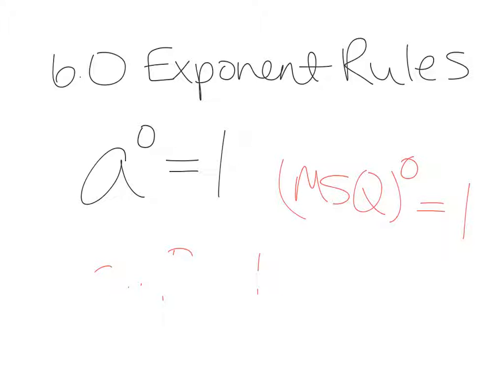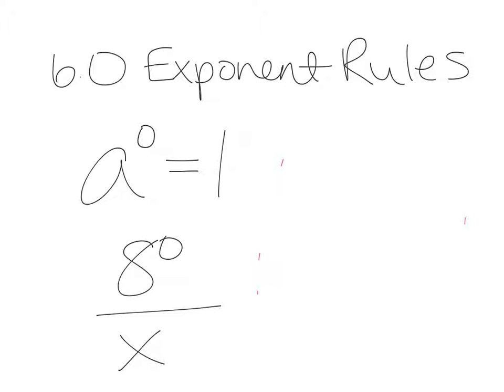Now, what happens sometimes is that we get combinations of this equal to 1. And what I mean by that is, let's say I have 8 to the zero over x to the third. Well the whole thing does not equal 1. The first part equals 1. This part right here is equal to 1, not the bottom.